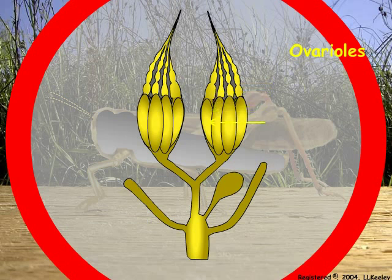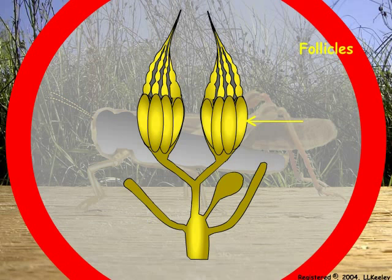Ovarioles are divided into chambers called follicles. Each follicle contains an oocyte that is becoming mature by depositing yolk.